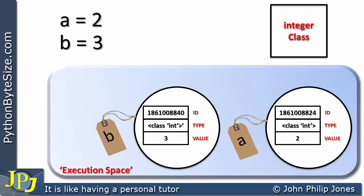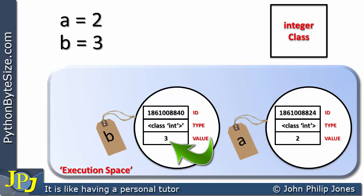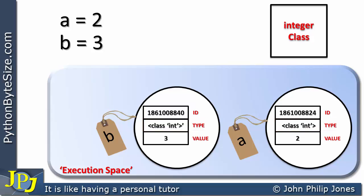What we now have are two objects based on the integer class. If we look at the ID field for both, we can see this ID is different from that one. The values are also different. So although both objects were based on the integer class, their IDs and values are different — but they still have the same type. This is rather like the construction industry analogy where the same blueprint produced a red house, a blue one, and a green one. Both objects share a lot in common but, like houses of different colors, they differ in specific attributes.